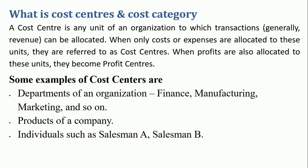A cost center is any unit of an organization to which transactions can be allocated. When only costs or expenses are allocated to these units, they are referred to as cost centers. When profits are also allocated to these units, then they become profit centers.